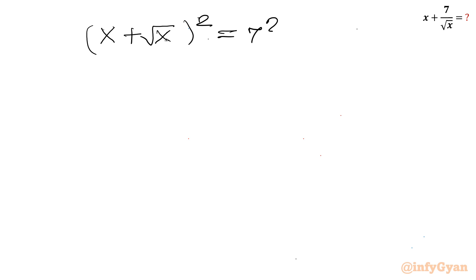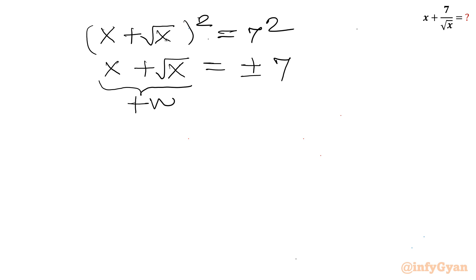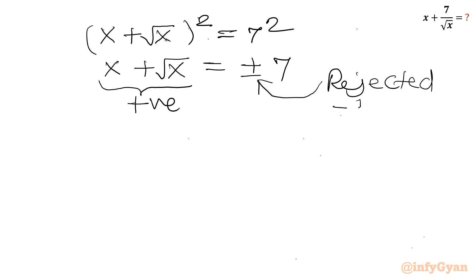Taking the square root of both sides gives x + √x = ±7. Since the left-hand side is always positive (x > 0), we reject the negative sign and accept the positive, giving x + √x = 7.